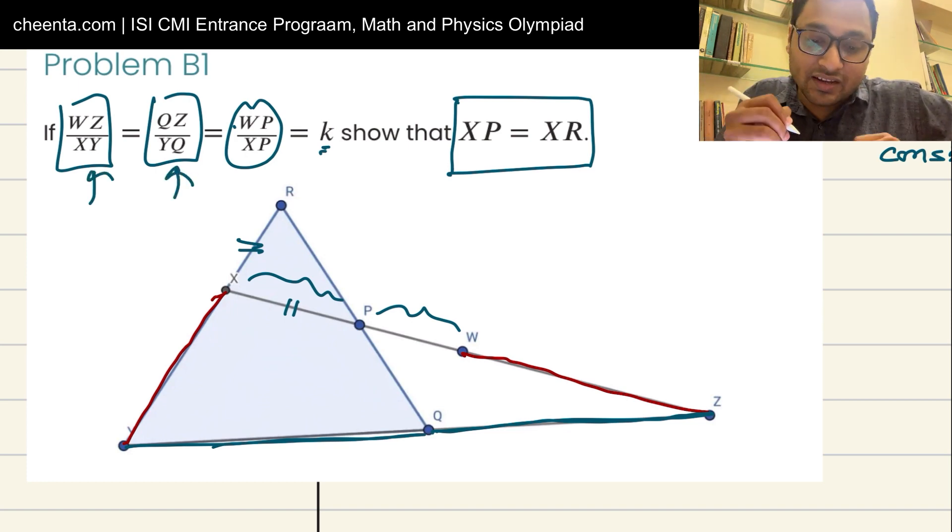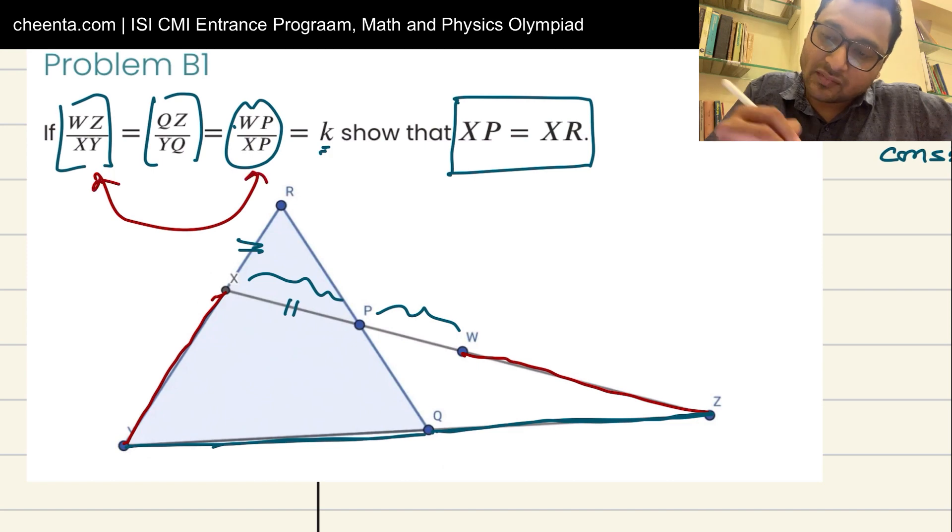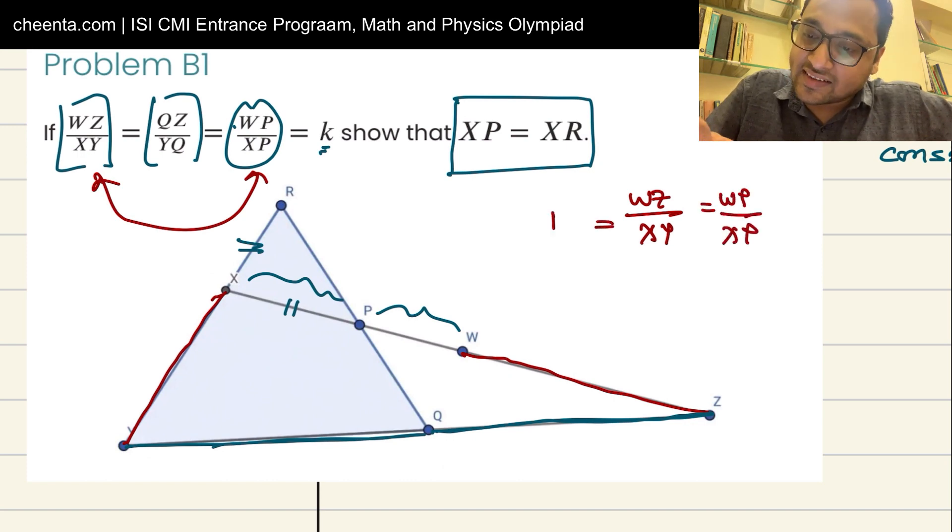I used addendo in these two ratios. So when I use addendo what I have is each of them is equal to WZ plus QZ. Actually, I am using addendo not on these two but on these two.